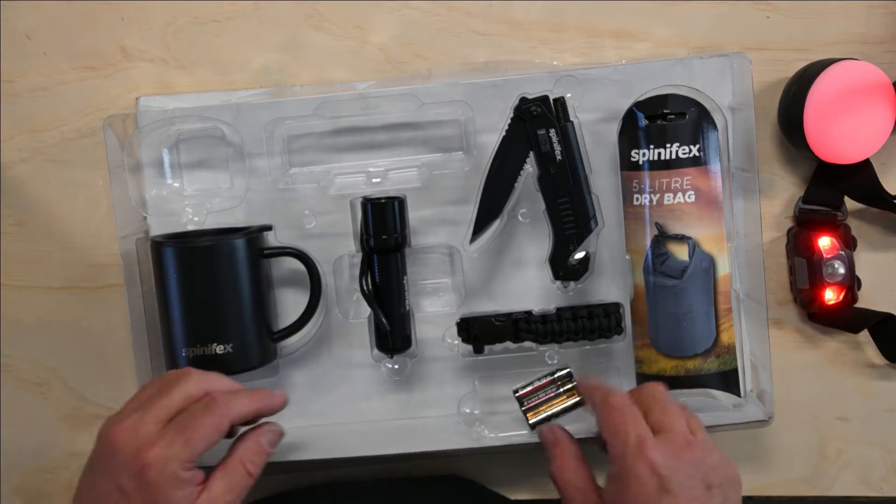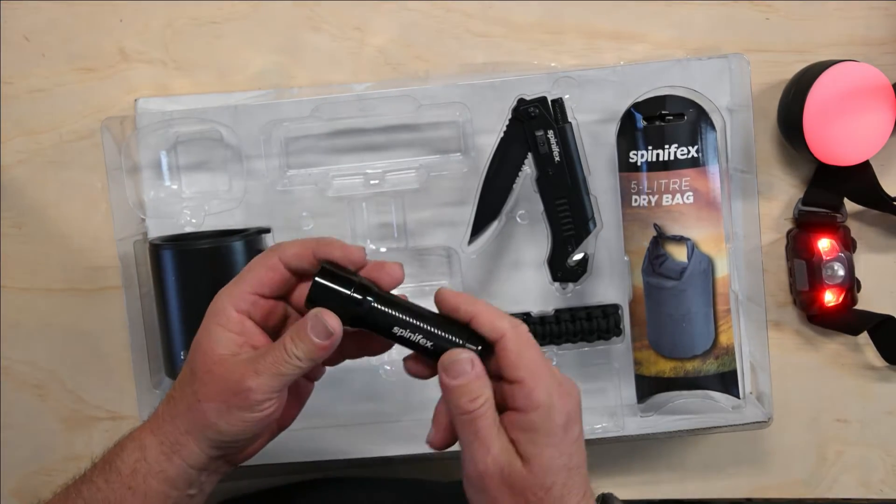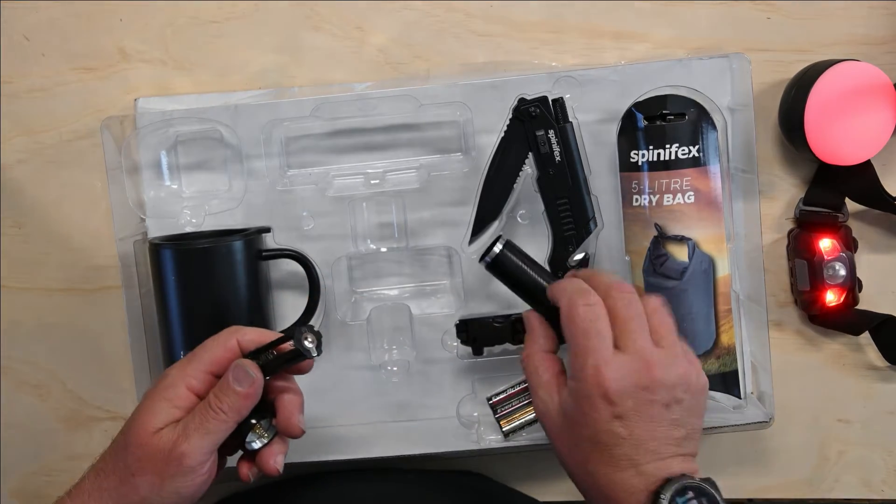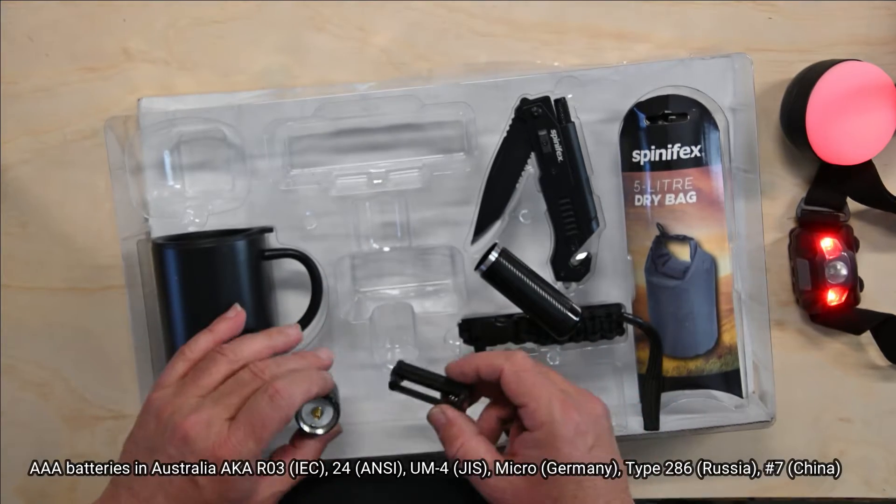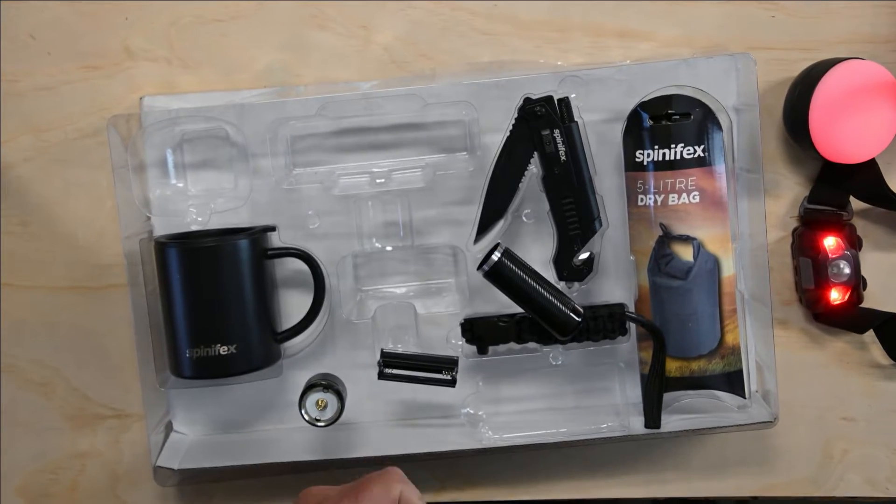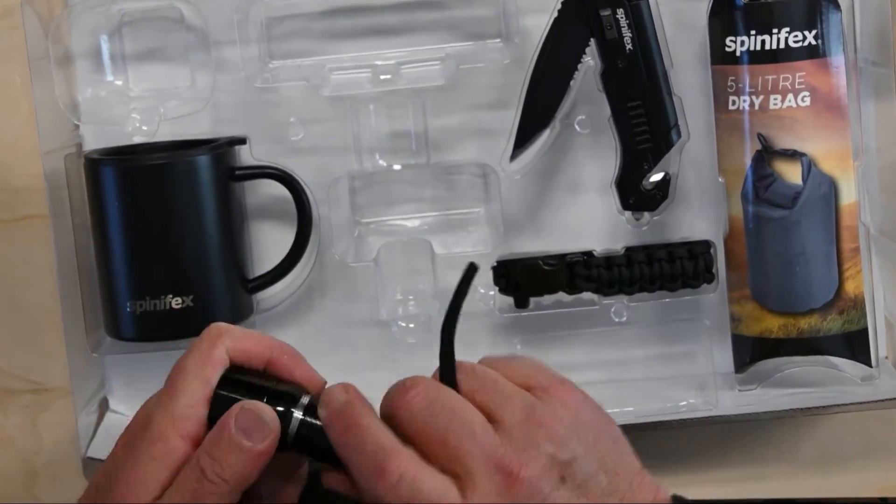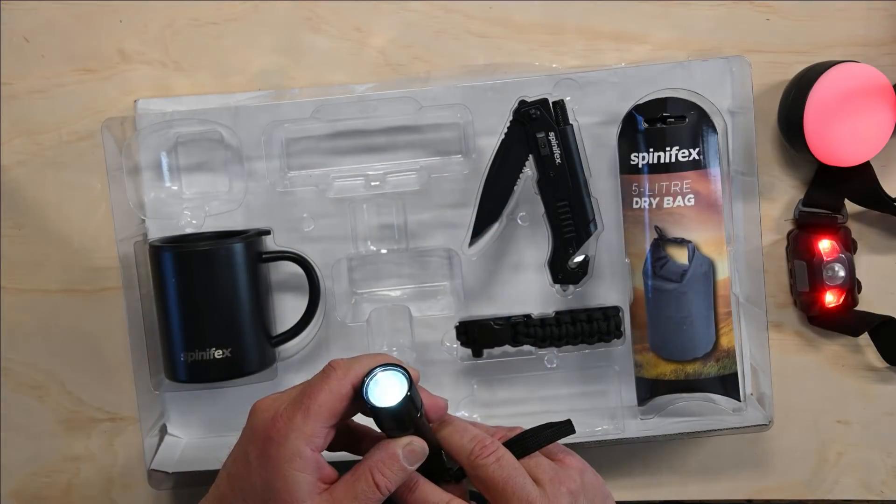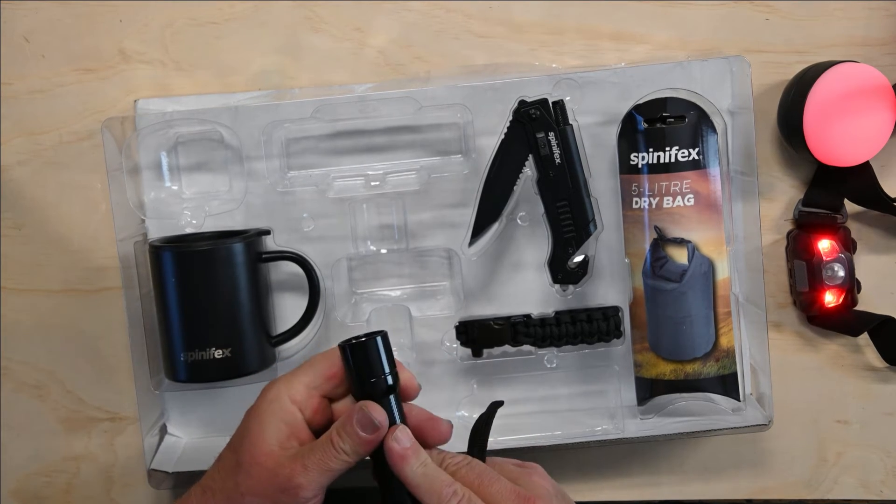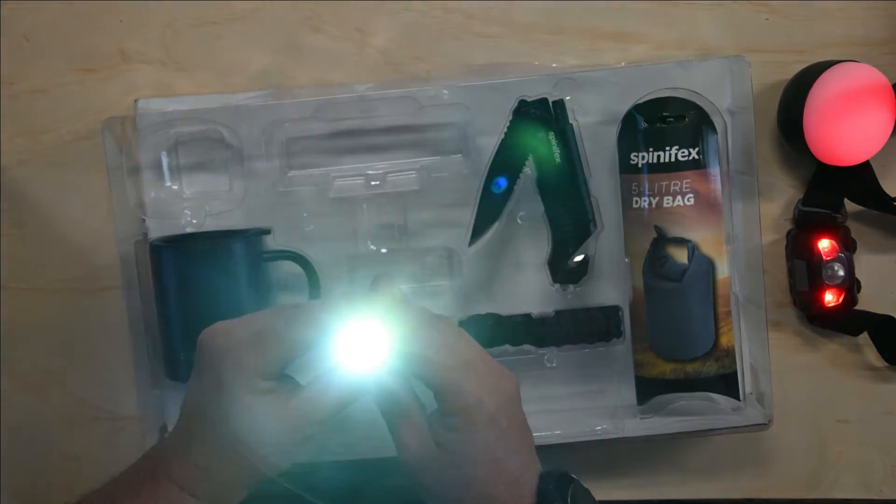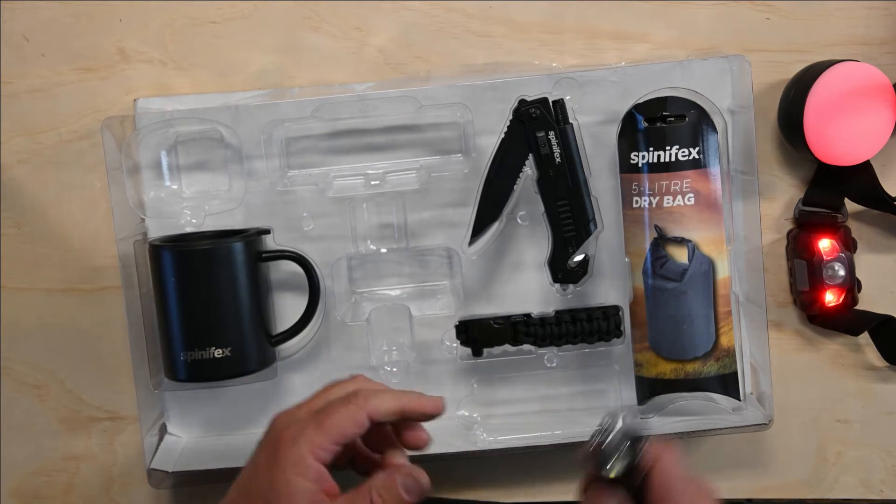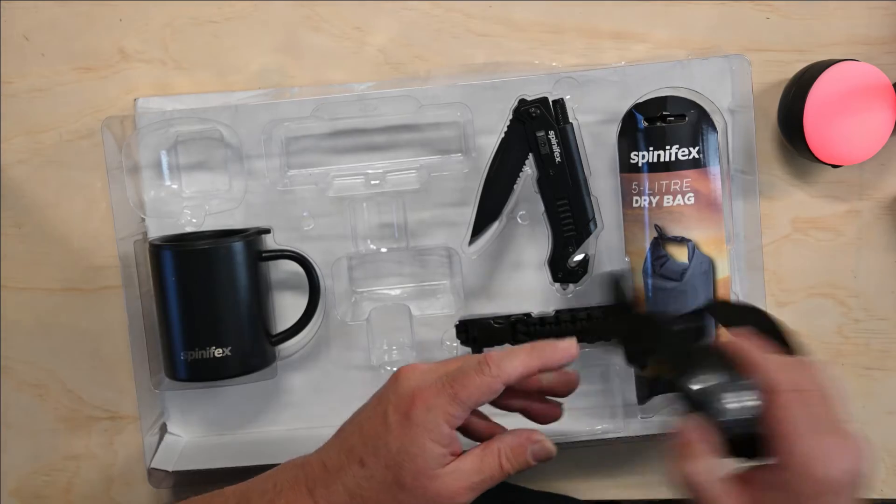And presumably this tiny little Spinifex branded torch is going to take the other three triple A cell batteries. I think I'm right, go to the top of the class. It's only got one setting, single setting. That's really cool. It's not great bright. It's not going to light up a blossom in a tree, but hey, three lots of light. And yeah, I'll say that that's a great feature.